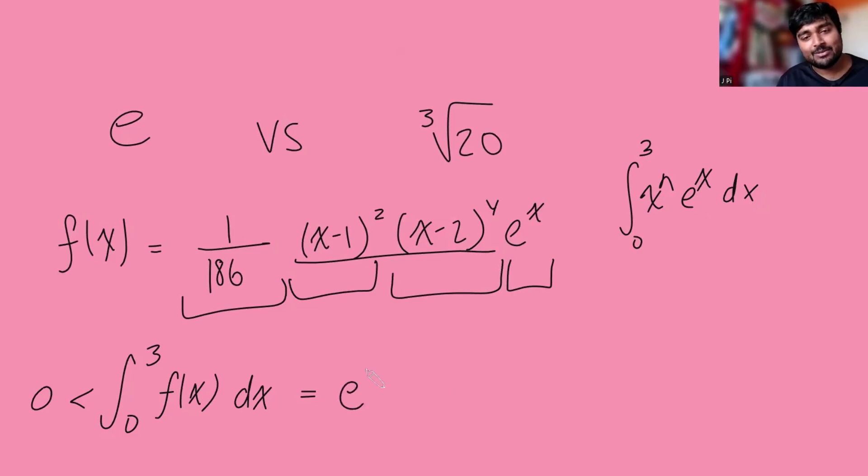It turns out that this here equals e cubed minus 20. And essentially, what we have is that e cubed minus 20 is positive, and so that means that e cubed is bigger than 20, and so that means that e is bigger than the cube root of 20. And that completes our proof.